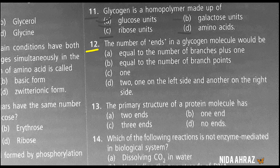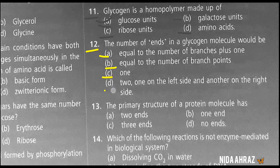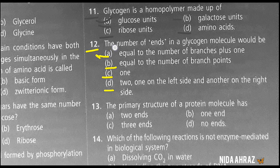The number of ends in a glycogen molecule would be: equal to the number of branches plus one, equal to the number of branch points, one, or two — one on the left side and another on the right side. The correct choice is option A — equal to the number of branches plus one.